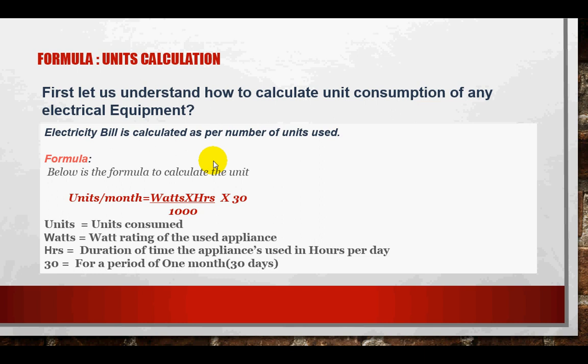Units per month is calculated as: Watts × Hours ÷ 1000 × 30 days. One kilowatt consumed over a period of one hour equals one unit. Since most equipment ratings are in watts, we divide by 1000 to convert to kilowatts. In this formula, watts is the power rating of the appliance, hours is the duration the appliance is used per day, and 30 is the number of days in the billing period.